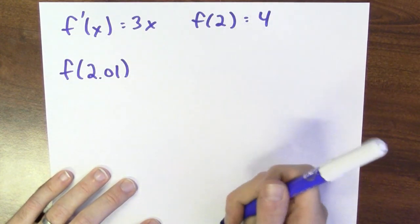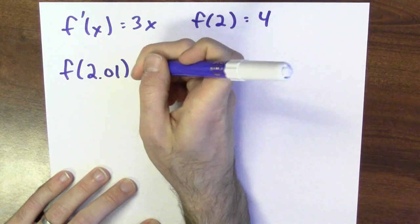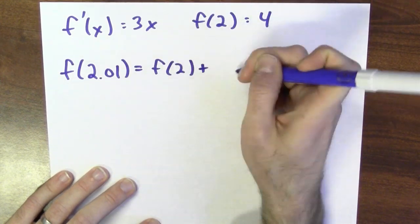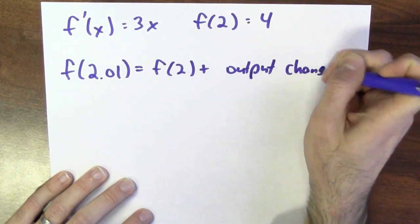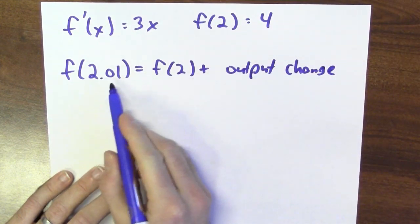Yes, I can. Right? F of 2.01, well, that's f of 2 plus how much the output changes when I go from 2 to 2.01.